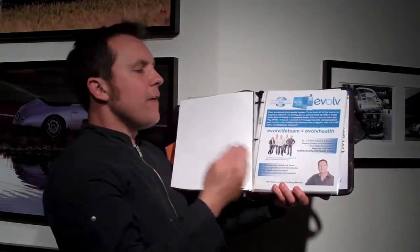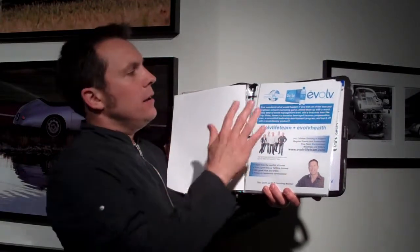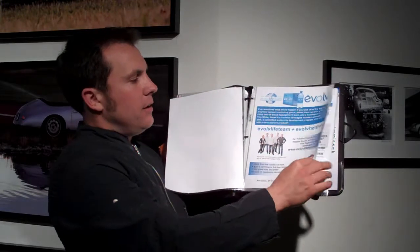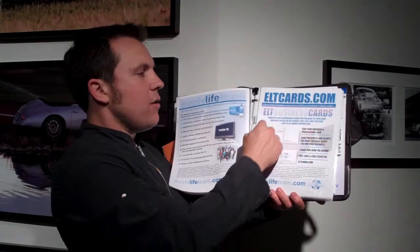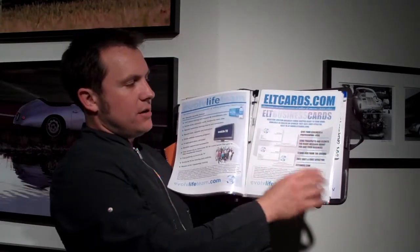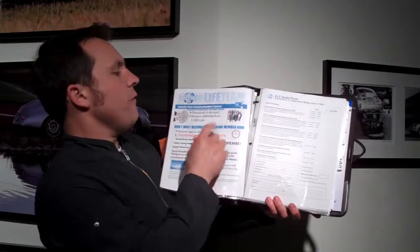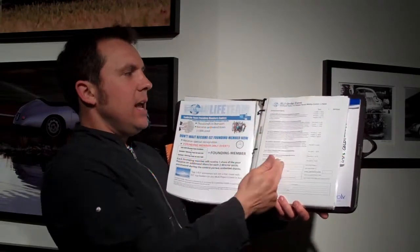Then I've printed off everything on the ELT downloads page. I've got the overview of Evolve Life Team and Evolve Health. I've got copies of the business card order form and kind of some information on getting business cards set up. The overview of the founding members contest so that, you know, as I'm giving a presentation I can just flip through that stuff. And then an order form for all the different items that are on the ELT leadership store.